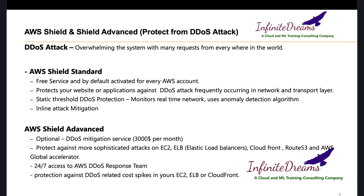The next one is AWS Shield Advanced. You might wonder what is the need for Shield Advanced when we already have the free Shield Standard service. Shield Advanced comes with a huge price tag — three thousand dollars per month. The advantage is it gives you more sophisticated protection for resources such as EC2, ELB, CloudFront, Route 53, and Global Accelerator. The second main advantage is it gives you 24/7 access to the AWS DDoS Response Team.